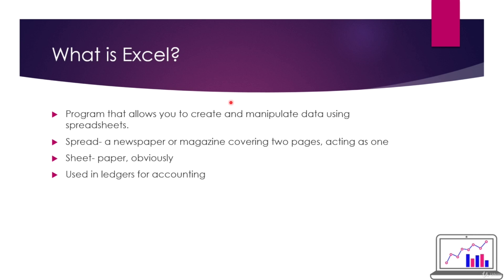I broke the word 'spreadsheet' down for you. 'Spread' is a newspaper or magazine covering two pages acting as one, which is why spreadsheets can be very long - they can go on pretty much forever. 'Sheet' is a piece of paper. So a spreadsheet is essentially a long piece of paper with data on it. They were, and still are, used in ledgers for accounting - the ledger itself is a spreadsheet, and you can still find those in paper form at a place like Staples.